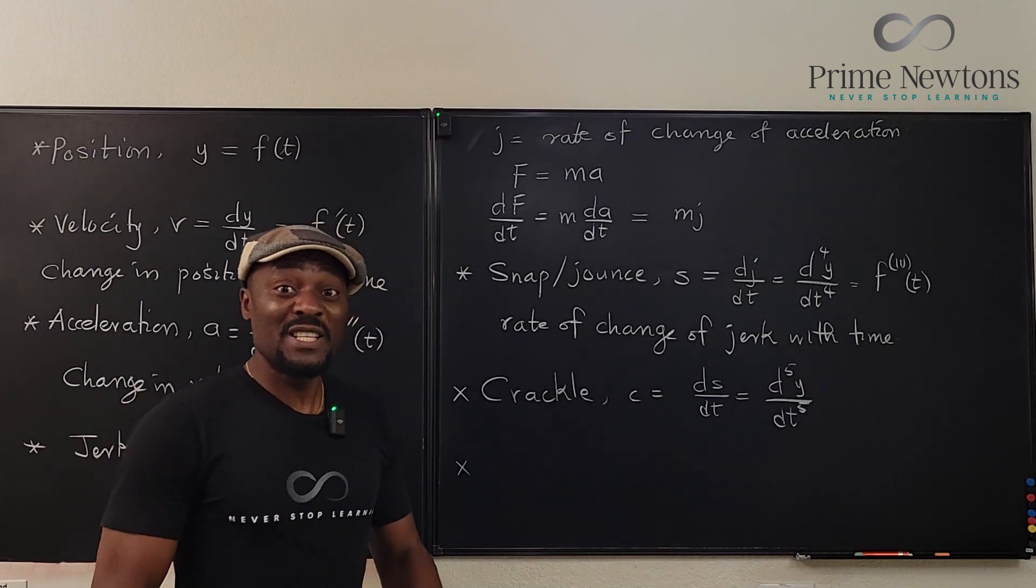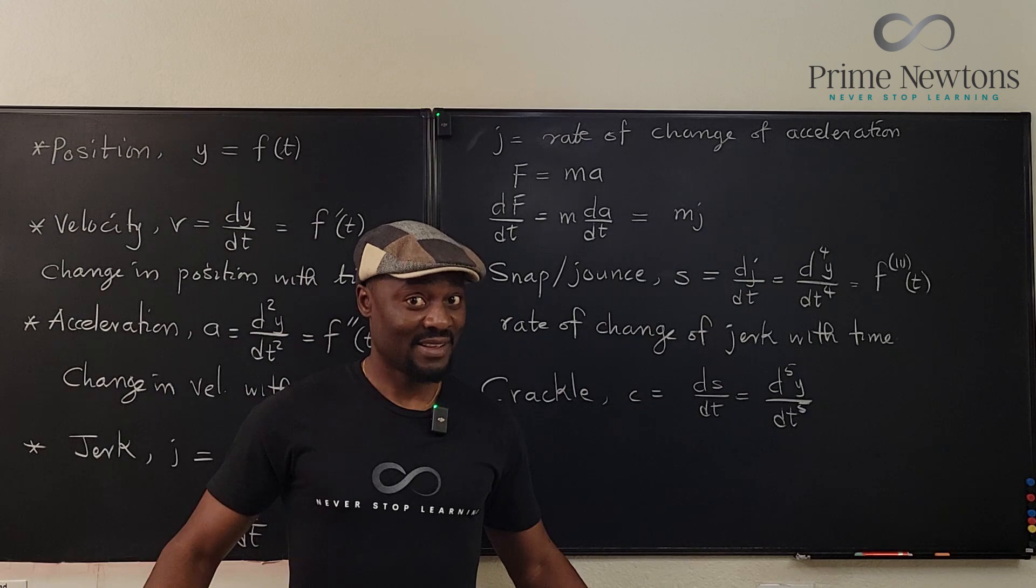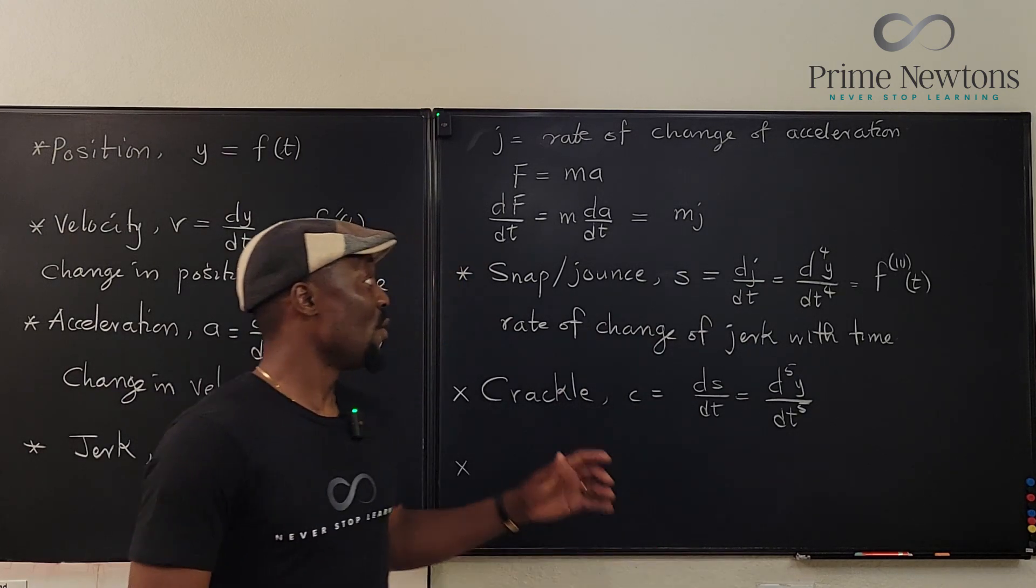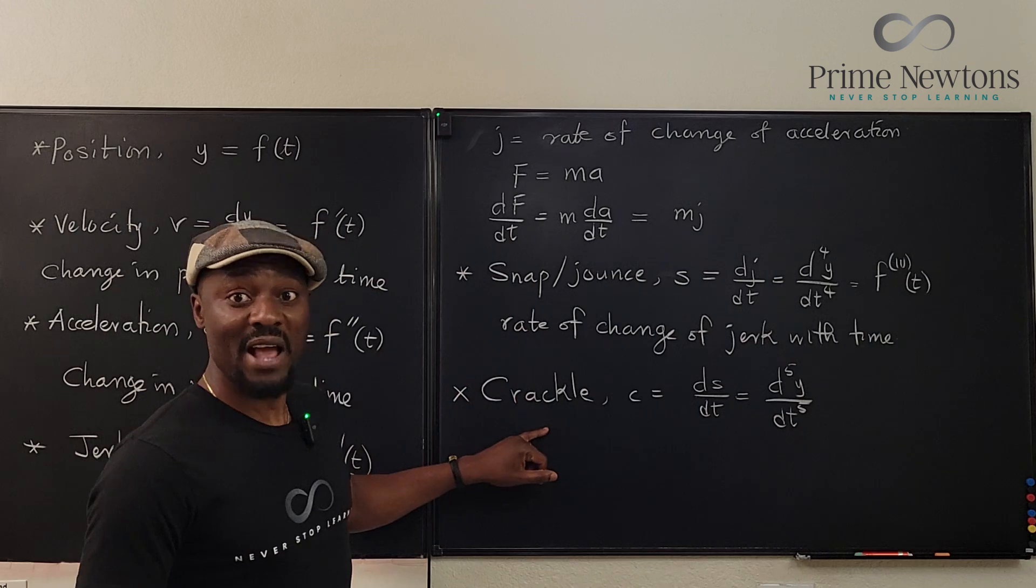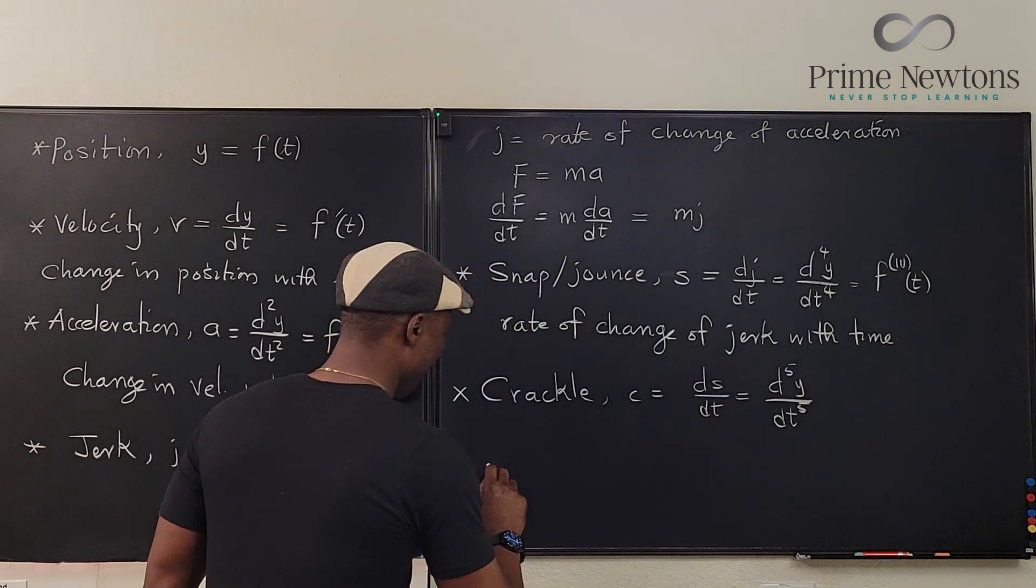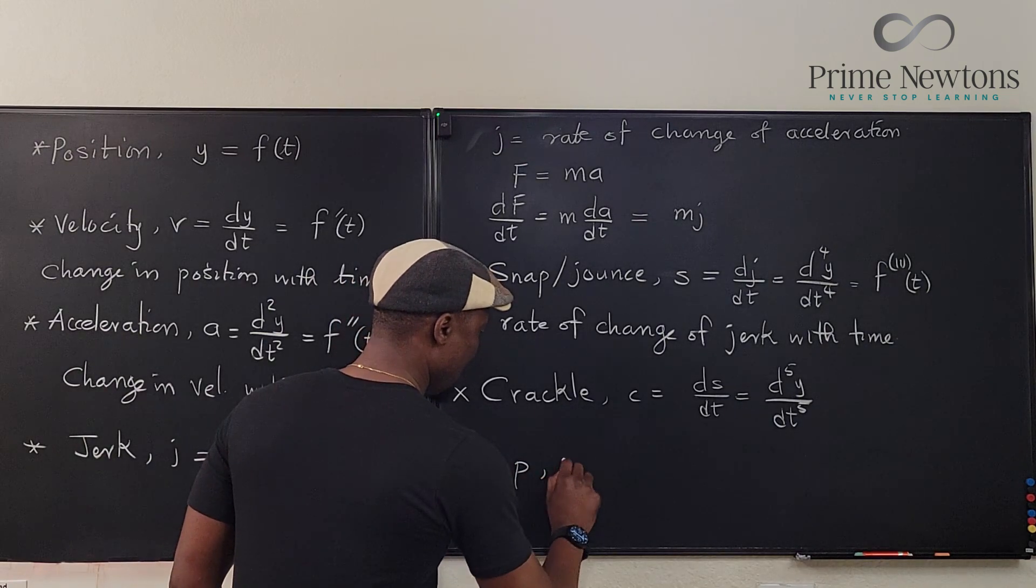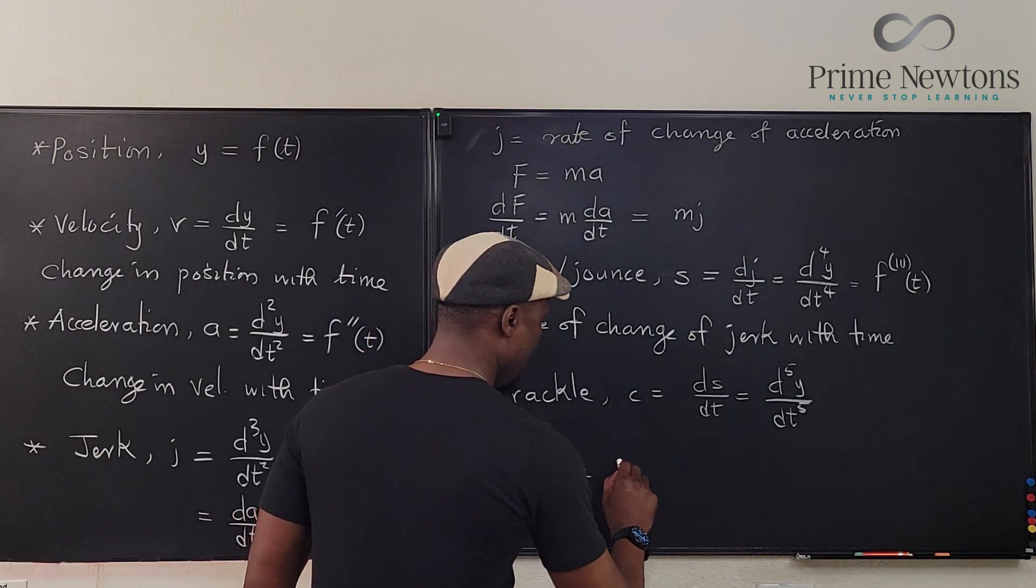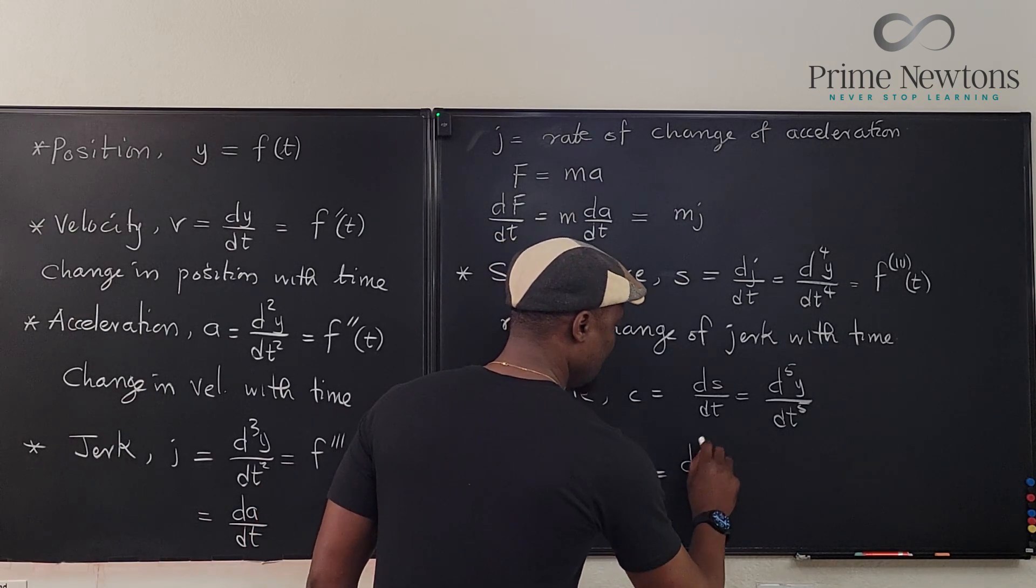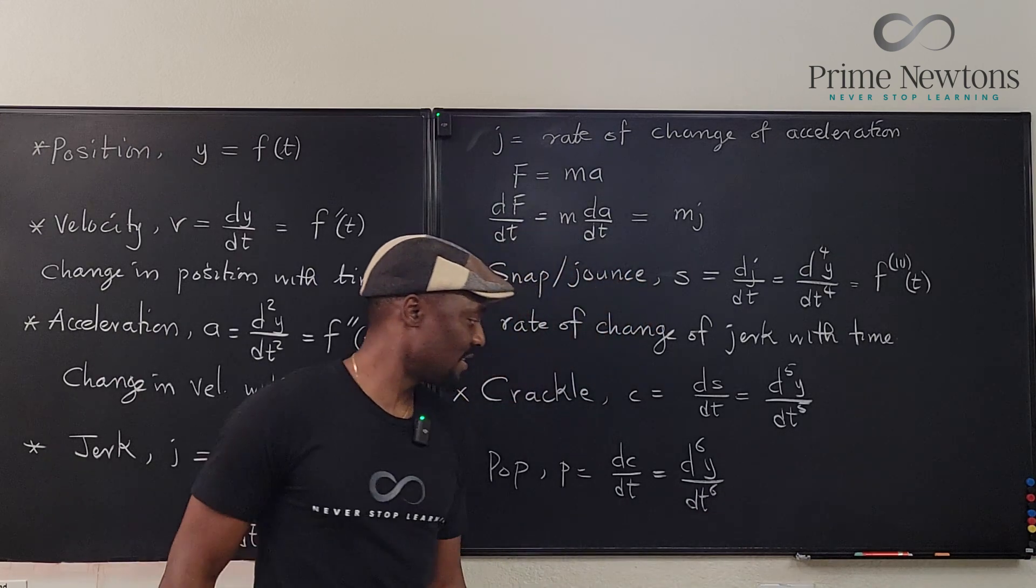And the final one, which I think is the end of all motion. It is when the object pops. Because after you jerk and snap and crackle, well, where else would you go? You pop. So, we say that the pop, letter p, is the rate of change of crackle with time, which is d⁶y/dt⁶.